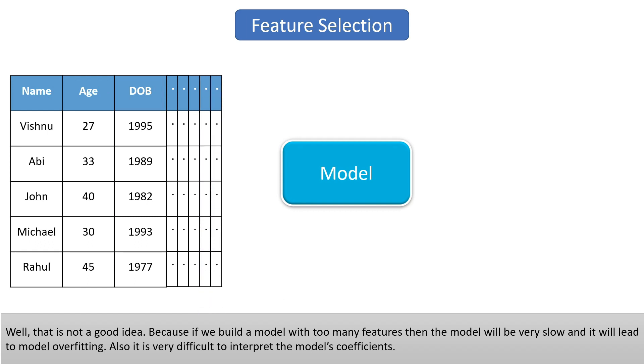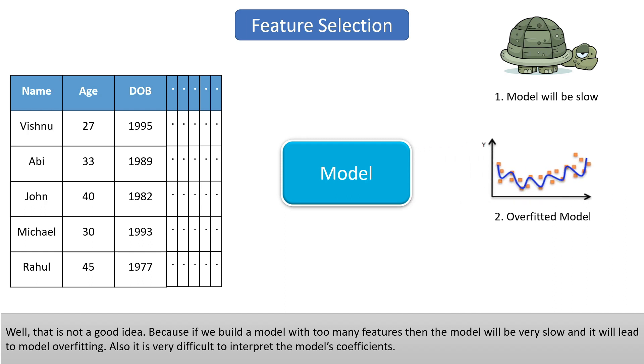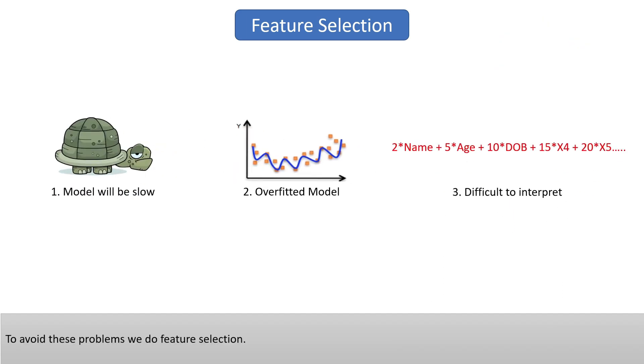Well, that's not a good idea. Because if you build a model with too many features, the model will be very slow during training as well as production. It will lead to model overfitting. Also, it's very difficult to interpret the model's coefficients or understand the model. So to avoid all these problems, we do feature selection.